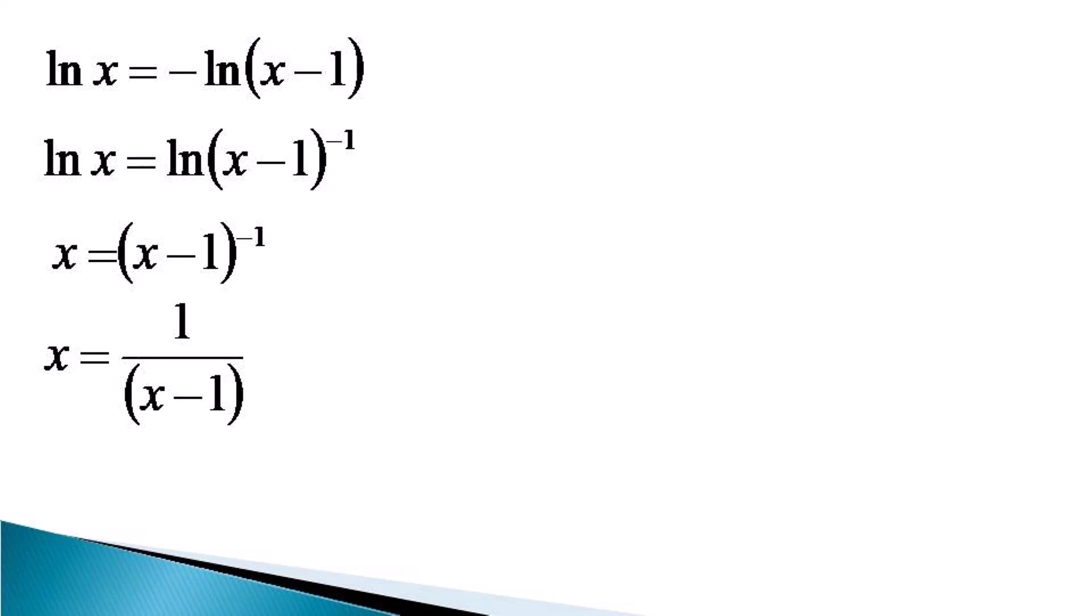Cross multiplication gives x(x-1) equals 1, or x² - x - 1 equals 0. This quadratic equation must have two roots. We must keep in mind that x must be greater than 1 for the equation to be valid, as ln(x-1) should not become negative.